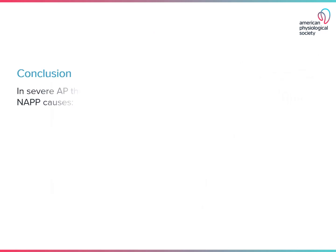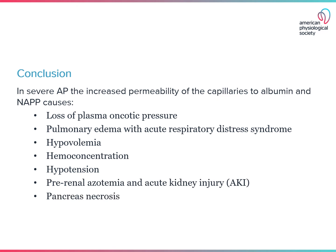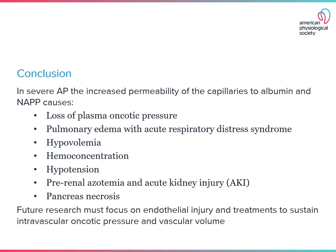In conclusion, in severe acute pancreatitis, the increased permeability of capillaries to albumin and non-albumin plasma proteins causes the loss of plasma oncotic pressure. This results in pulmonary edema with acute respiratory distress syndrome, hypovolemia, hemoconcentration, hypotension, pre-renal azotemia, acute kidney injury, and pancreatic necrosis from hypoperfusion of the pancreas. Future research must focus on endothelial injury and treatments to sustain intravascular oncotic pressure and vascular volume.